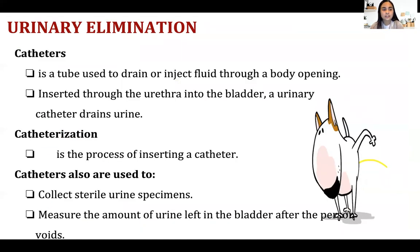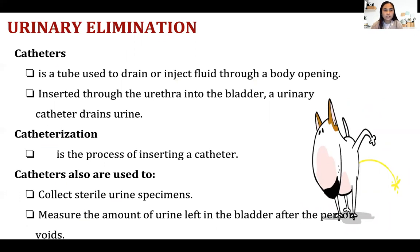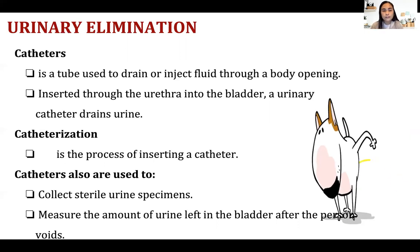Next, let's discuss catheters. In the hospital, you will see many patients with catheters, especially when monitoring intake and output or observing urine color and consistency. A catheter is a tube used to drain or inject fluid through a body opening. It is used for urinary retention or to flush the bladder when there is bleeding. Catheterization is the process of inserting a catheter.